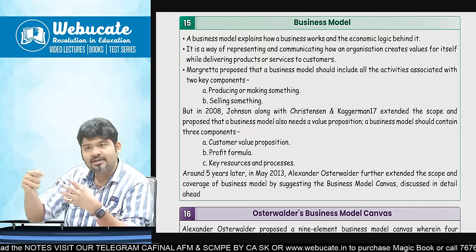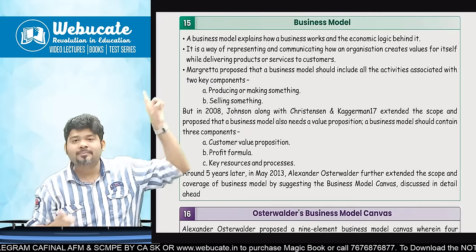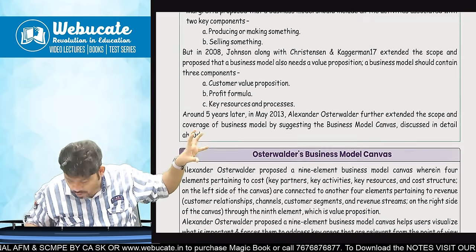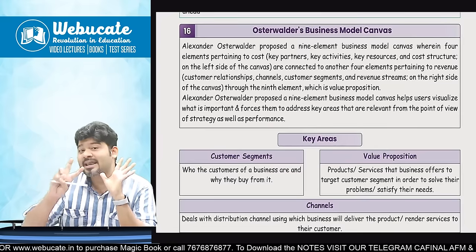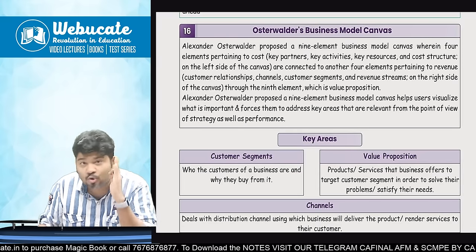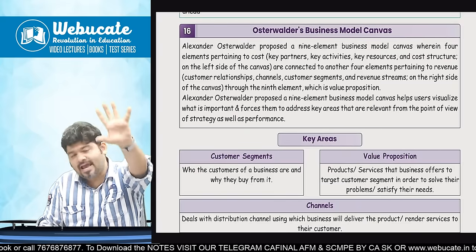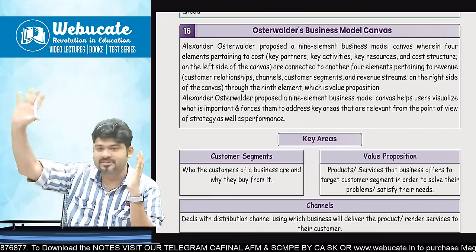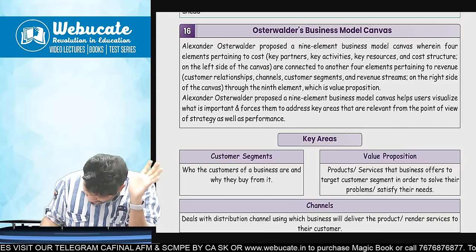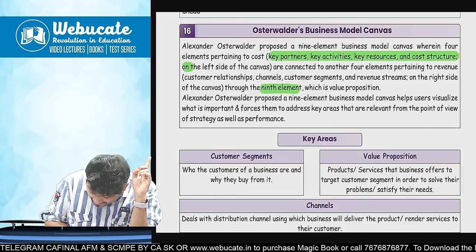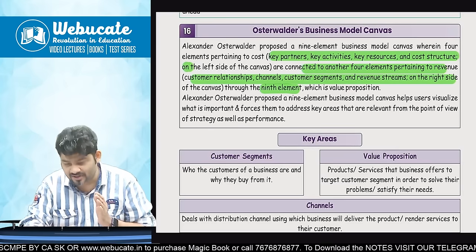All of that connected together is basically your business model. Ab isi business model ko aur ek level pe lekar gaye hamare Osterwalder — inhone banaya ek Business Model Canvas, aur inhone iske andar 9 elements include kiye aur bola ki agar kisi business ko grow karna hai, then in that case they should focus on these 9 elements, these 9 activities, and if all these 9 activities are taken care of, then definitely your business is going to grow for sure. Aur mein aaj aap logon ke saath le raha hoon ek example of Zomato. Total 9 elements hain jinke baare mein mein aap logon ke saath baat karne wala hoon, and yeh 9 elements Zomato ne kaise identify kiya hai, that is now what we will also see.